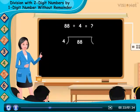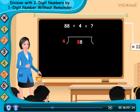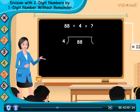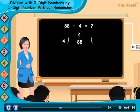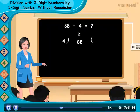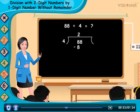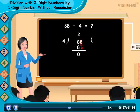Let us divide it. First we divide 8 by 4, as 4 multiplied by 2 is equal to 8. So 4 goes 2 times in 8. Write 2 in the tens of the quotient and write 8 below 8. Then subtract 8 minus 8, which gives 0. Now bring down the digit from the ones place.